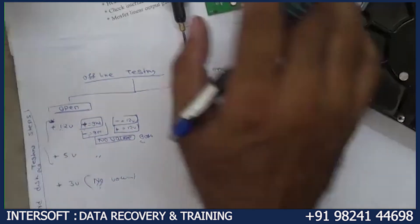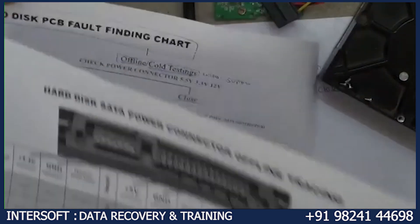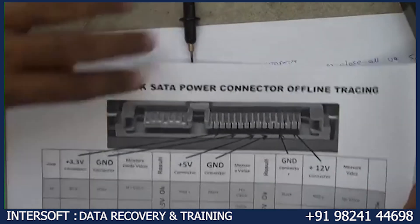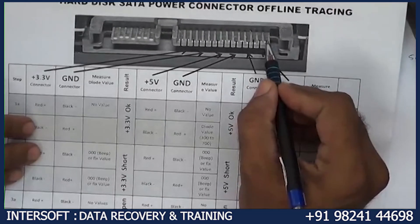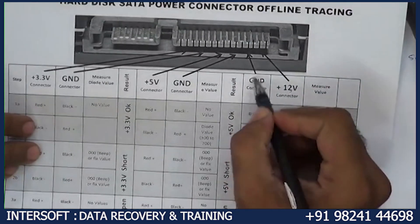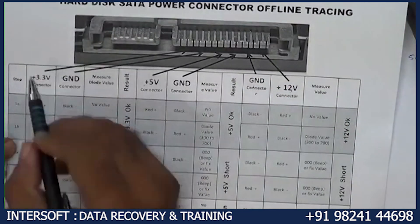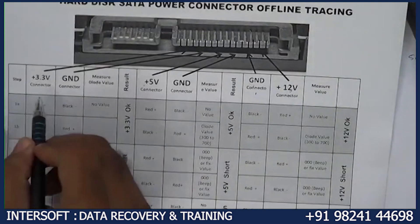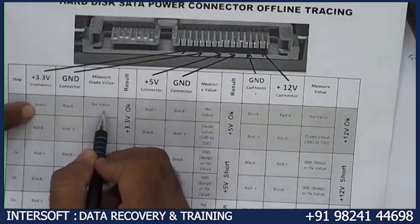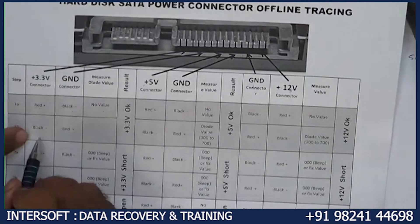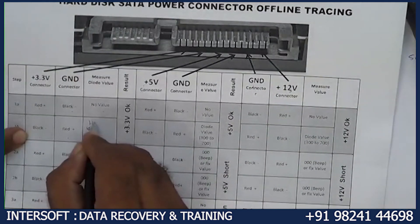Here is the easy explanation: 12V, ground, 5V, ground, 3.3V, ground. If I put red here and black on ground — no value. And if I put black here and red — value comes, high value. High value means that voltage line is okay.